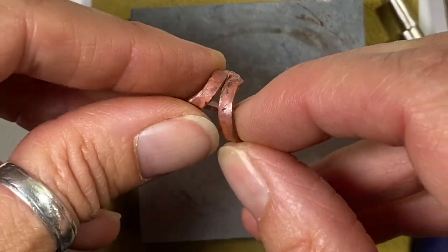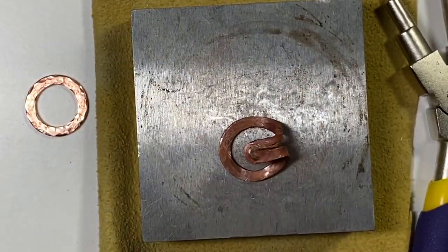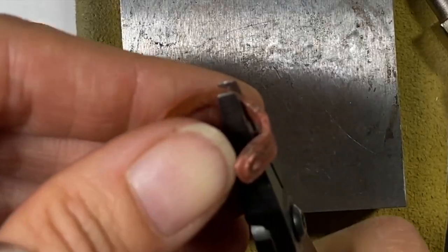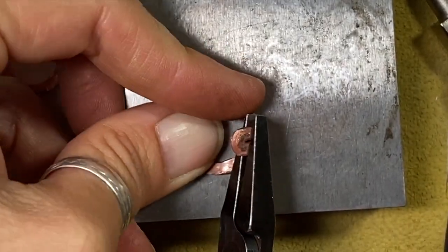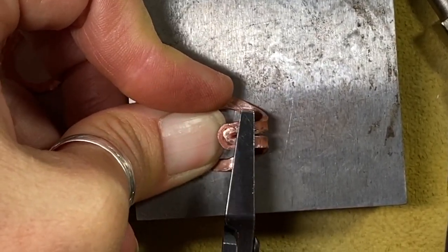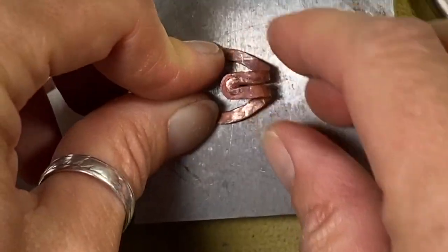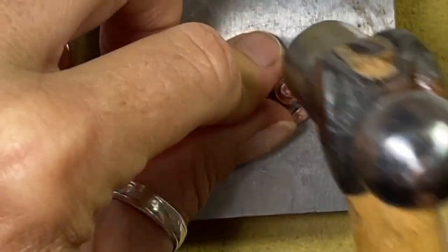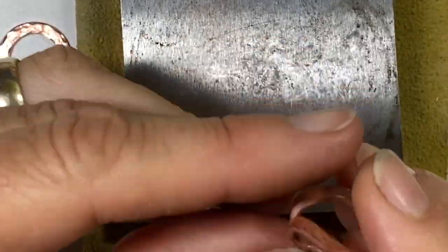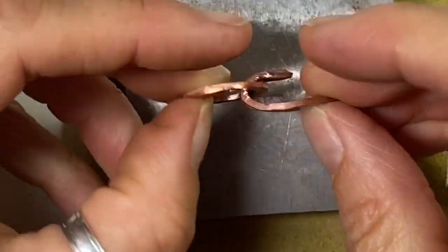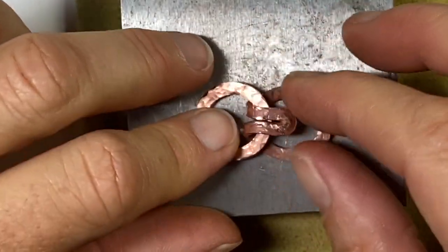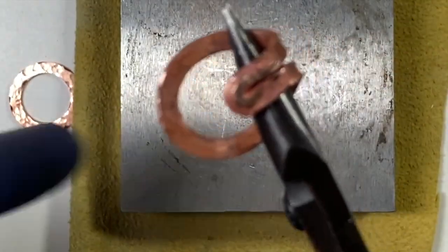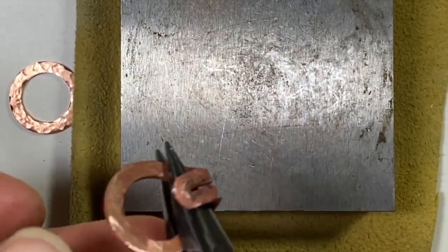I need to bend a little more snug up against the clasp, so I'm going to need my hammer back. This takes a little bit of manipulating to get it exactly how you want it.